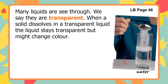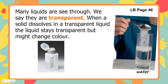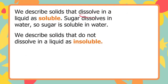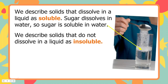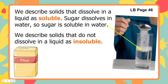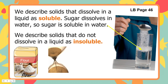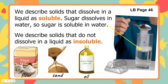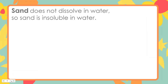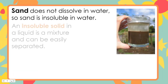When a solid dissolves in a transparent liquid, the liquid stays transparent but might change color. We describe solids that dissolve in a liquid as soluble. Sugar dissolves in water, so sugar is soluble in water. We describe solids that do not dissolve in a liquid as insoluble. Flour, sand, oil, and metal are best examples. Sand does not dissolve in water, so sand is insoluble in water.